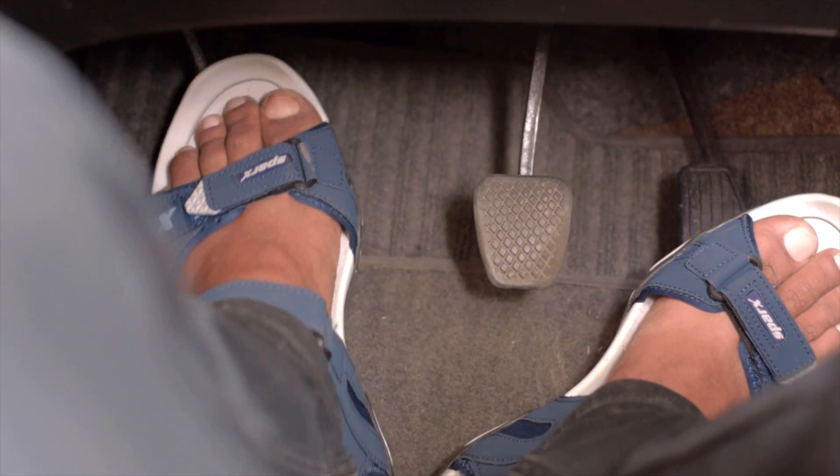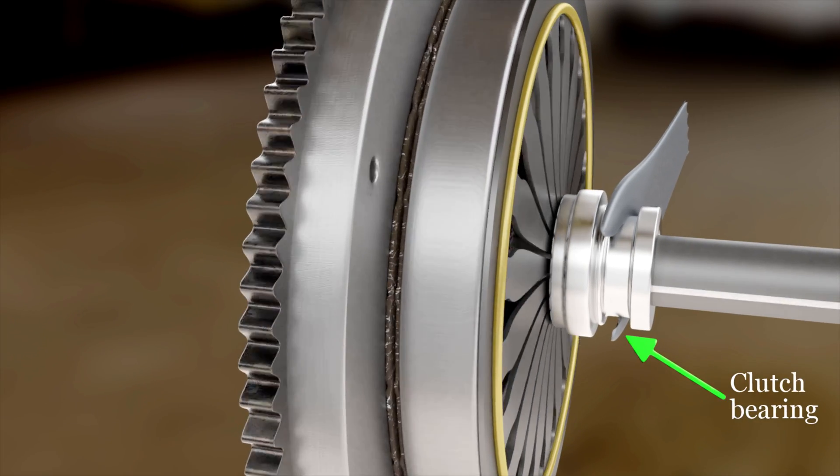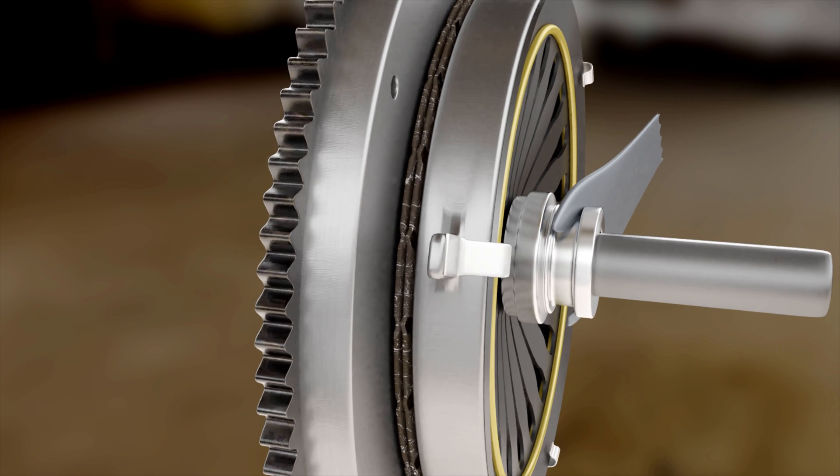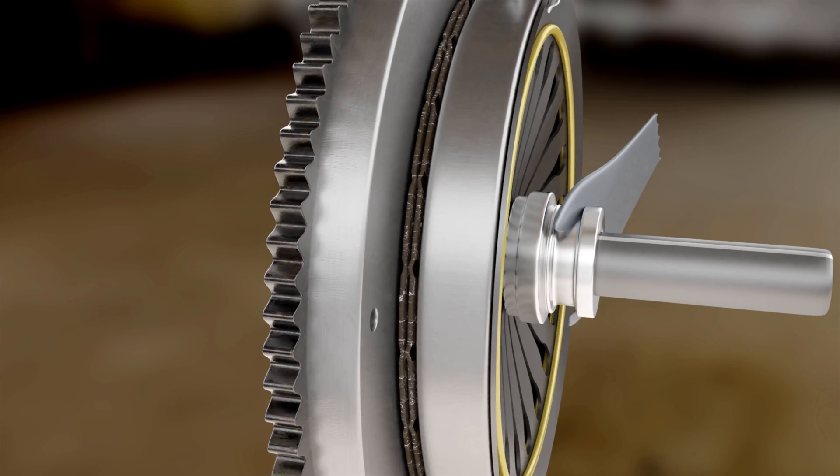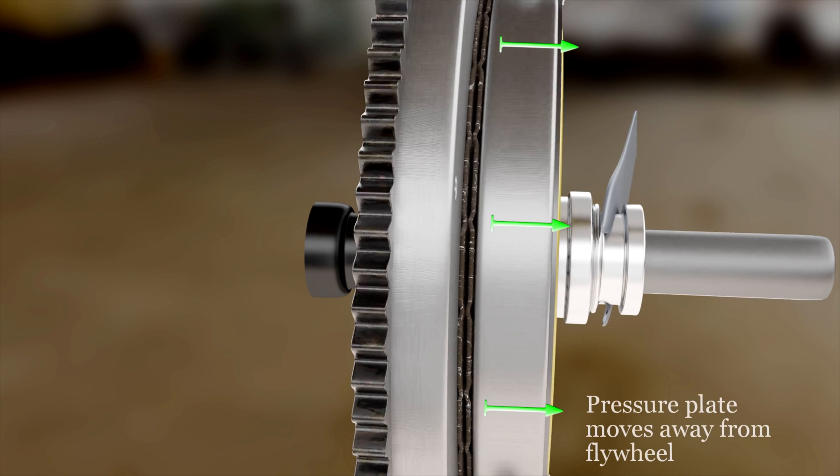When the clutch pedal is pressed, a clutch actuating bearing pushes the diaphragm spring towards the flywheel at the center. This causes the outer edge of the diaphragm spring and thus the pressure plate to move away from the flywheel.